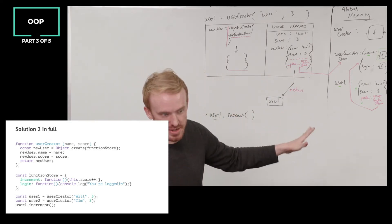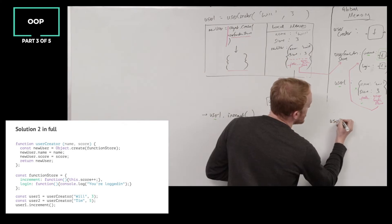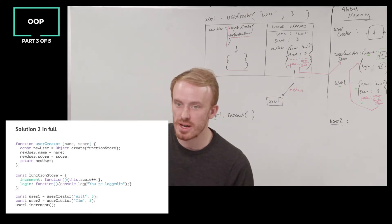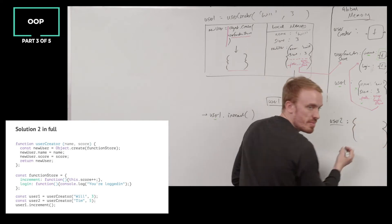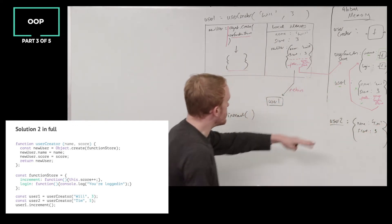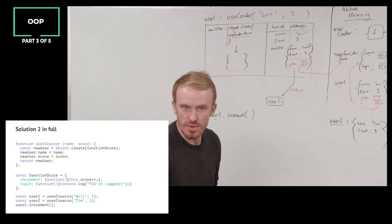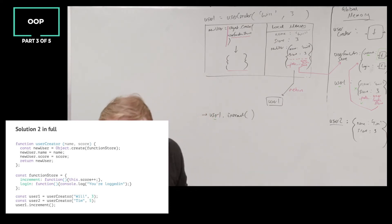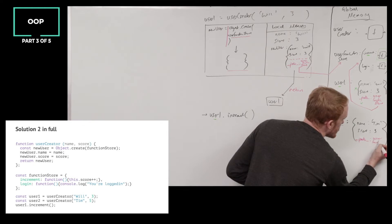We create an execution context with it. This same function would also be available to user2. What would user2 have stored in it after calling userCreator with Tim and five? It's going to have an object with property name assigned to Tim and property score assigned to five. And what's the hidden property? The underscore proto underscore hidden reference to userFunctionStore.